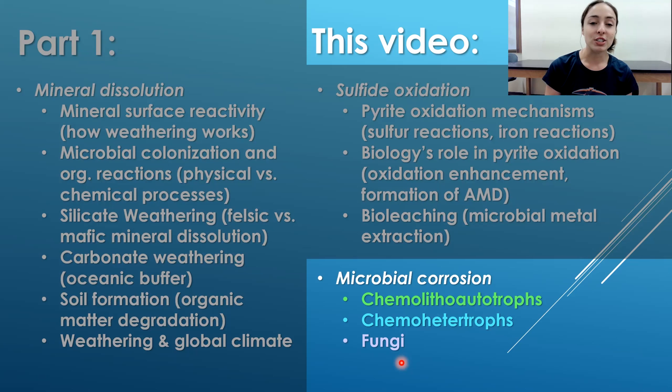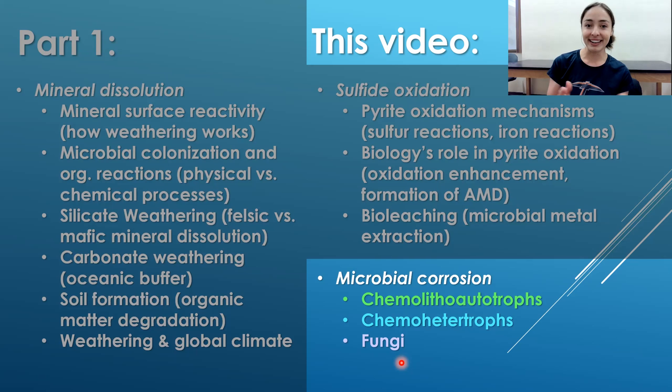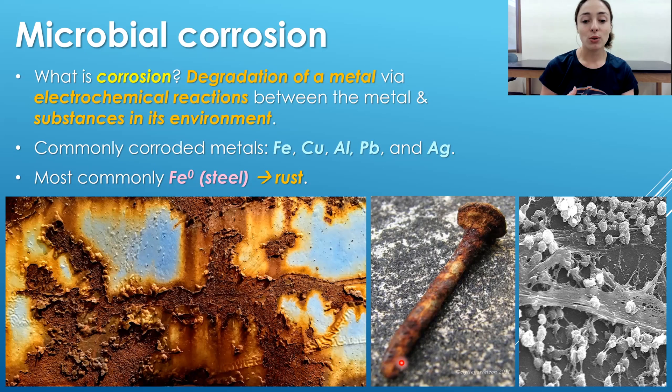For this video, just know that the first group shown in green is a type of bacteria, the second group shown in blue is another type of bacteria, and the fungi are their own category. Before we get into those three types of microorganisms that contribute to corrosion, let's talk a little about what corrosion actually is.